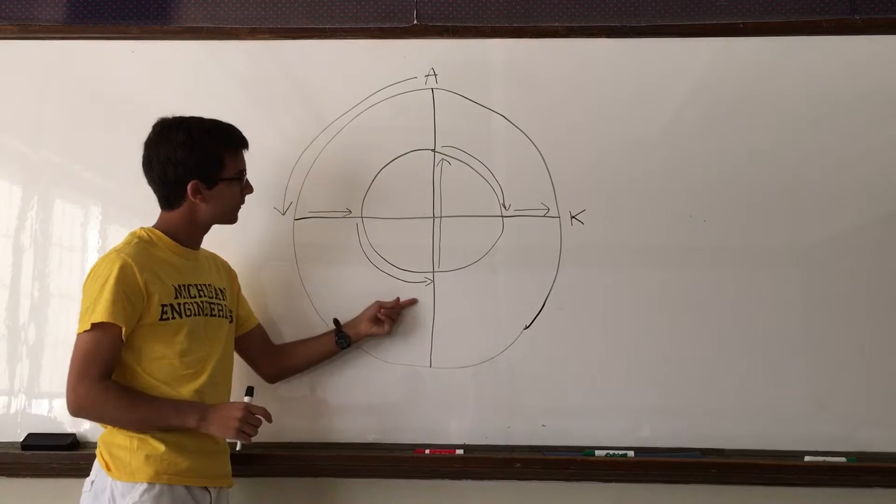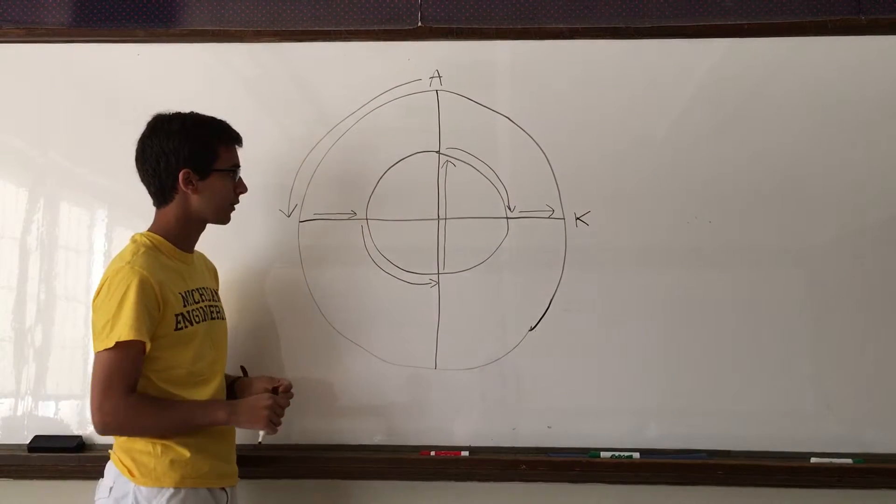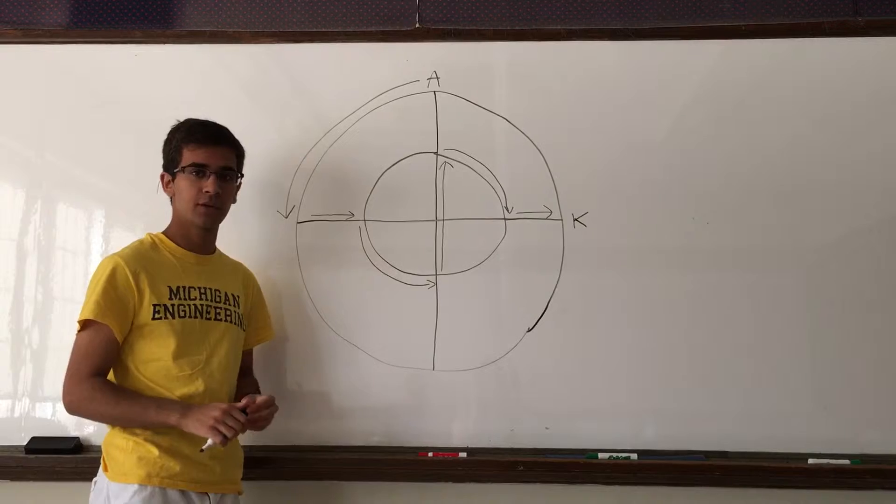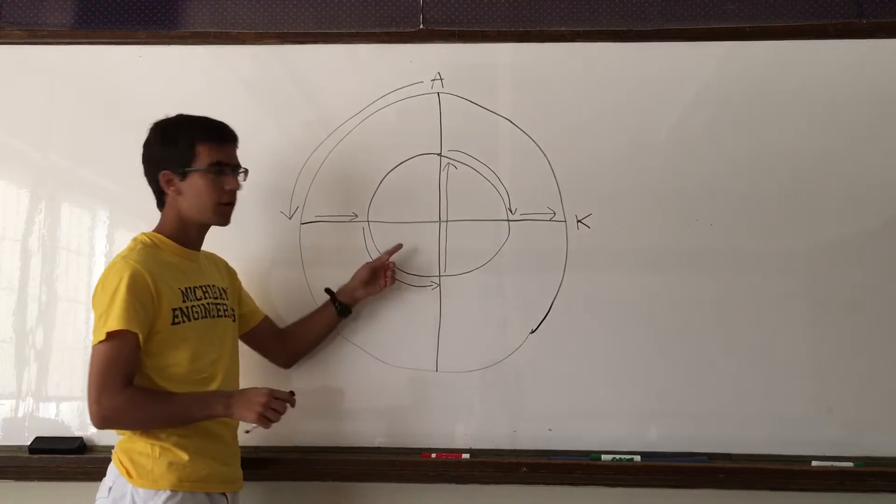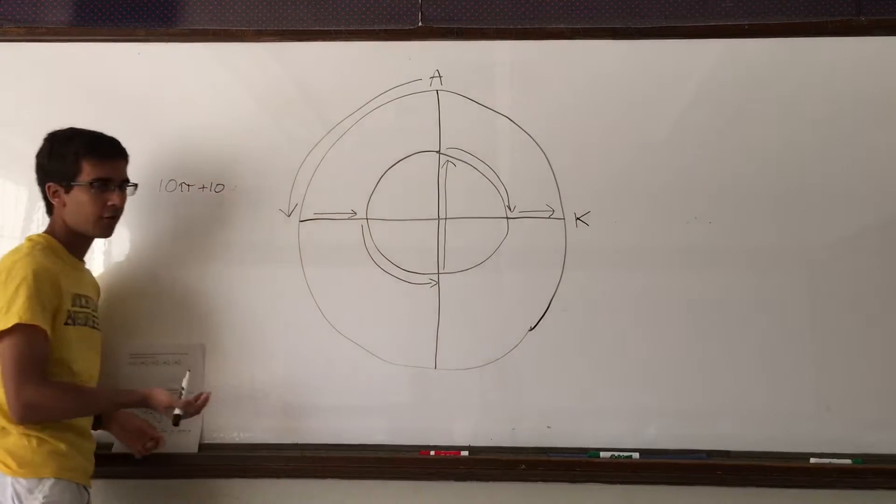Now we'll look at this part. Just like before, it's one quarter of the total circumference of the circle. This time, our circumference is 20π. So 20π divided by 4 is 5π. So we add another 5π.